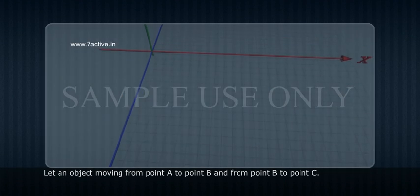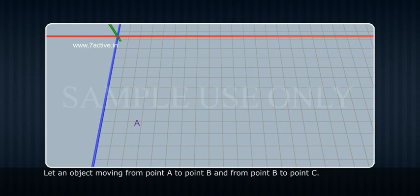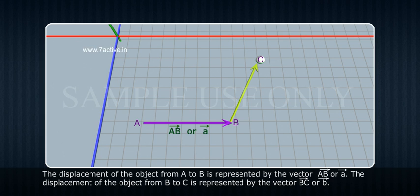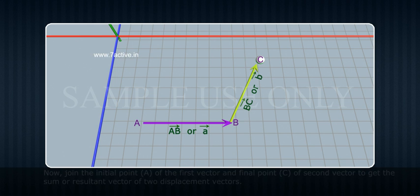Let an object move from point A to point B and from point B to point C. The displacement of the object from A to B is represented by the vector AB bar or A bar. The displacement of the object from B to C is represented by the vector BC bar or B bar.